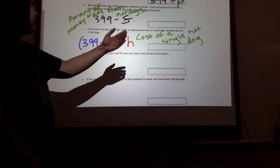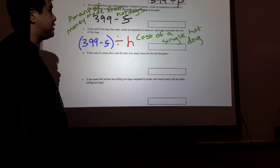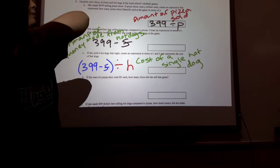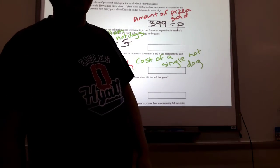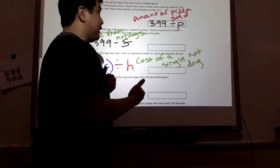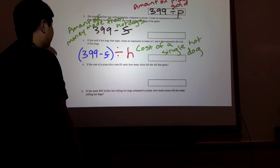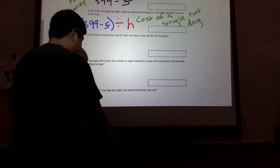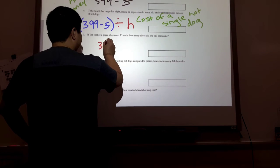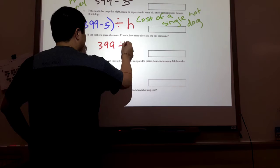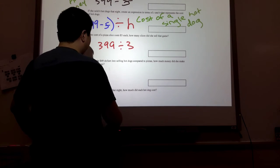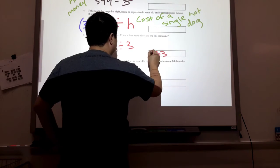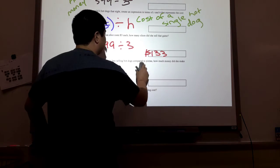If the cost of pizza is $3 each, how many slices did she sell at that game? Remember that in our first expression, the amount of pizza sold is 399 divided by P, where P is the price of pizza. We are now given P — P is 3. So therefore we need to do 399 divided by 3. Using a calculator or long division, we get 133 slices. That is how many slices she sold at that game.